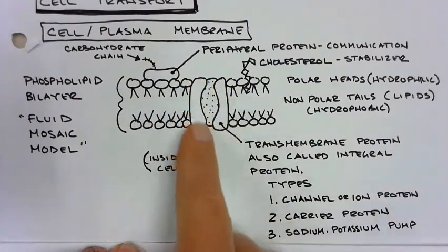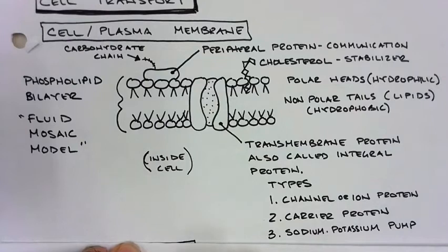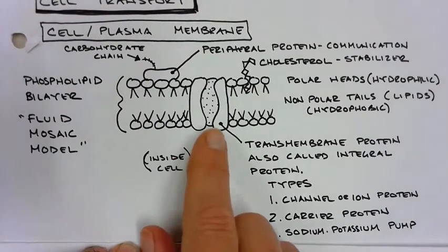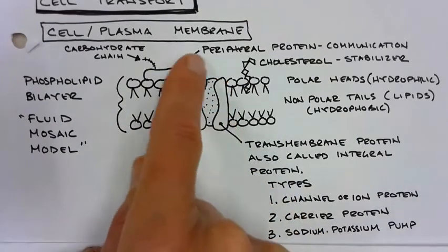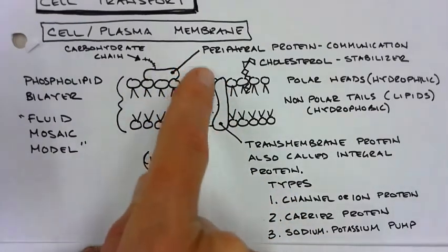You'll notice this thing in the middle here is called a transmembrane protein. It's also sometimes called an integral protein. It goes all the way across and things can actually pass through this protein.